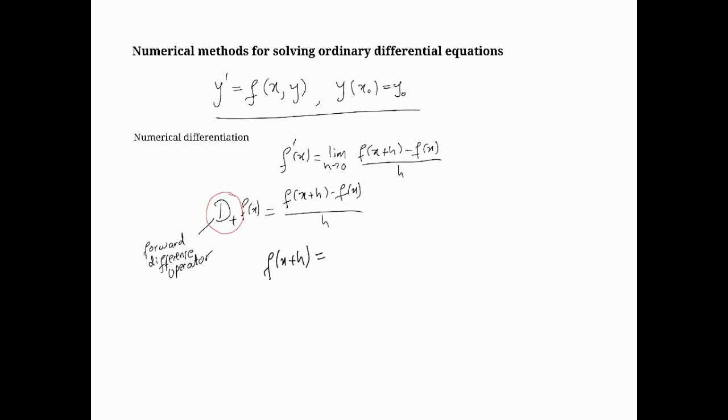If we do the Taylor series expansion, we see that f(x+h) = f(x) + hf'(x) + (h²/2)f''(θ₁), where θ₁ is some value between x and x+h. That would be the Taylor series expansion.